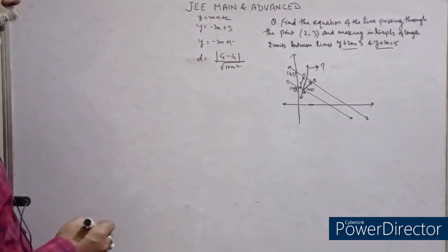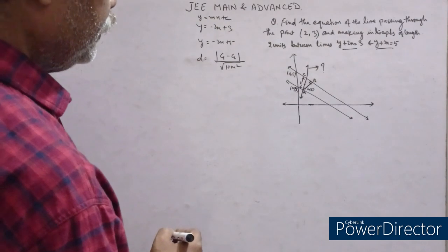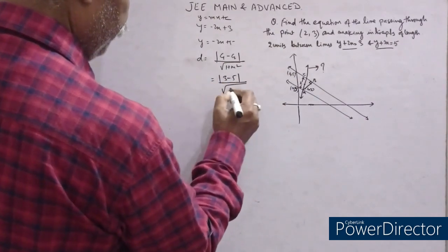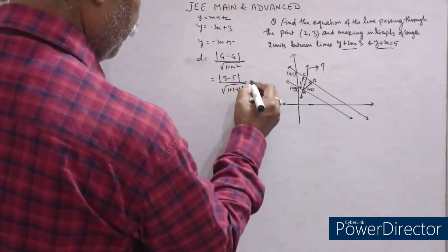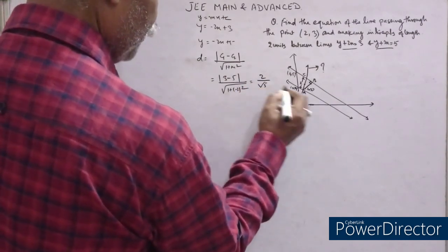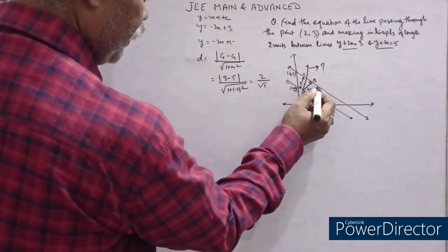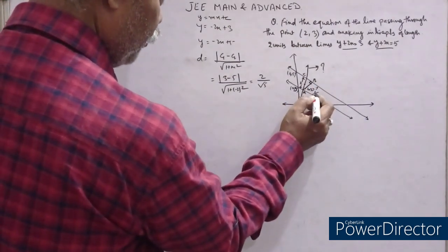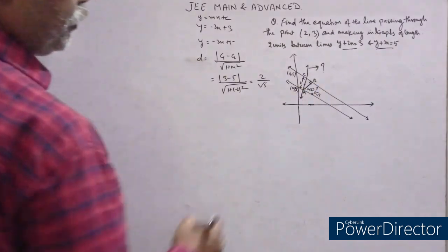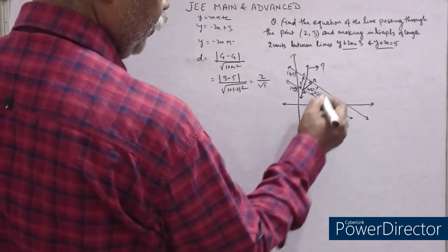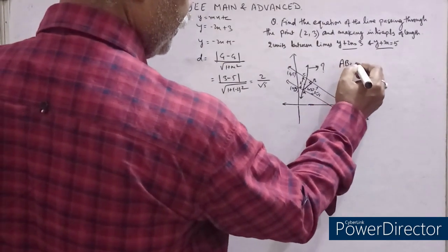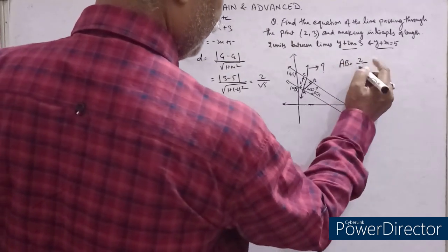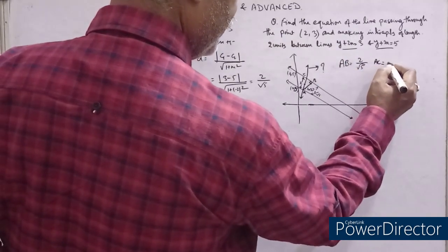Here C₁ - C₂, so this will be |3 - 5| / √(1 + (-2)²). This comes out to be 2/√5. So the perpendicular distance AB is 2/√5, and your AC is 2.